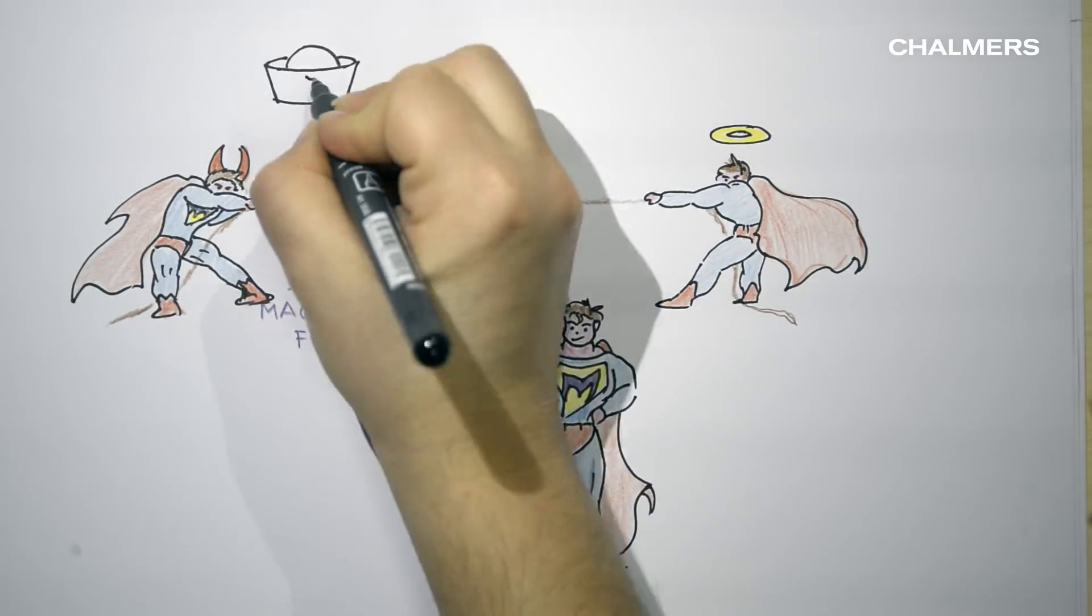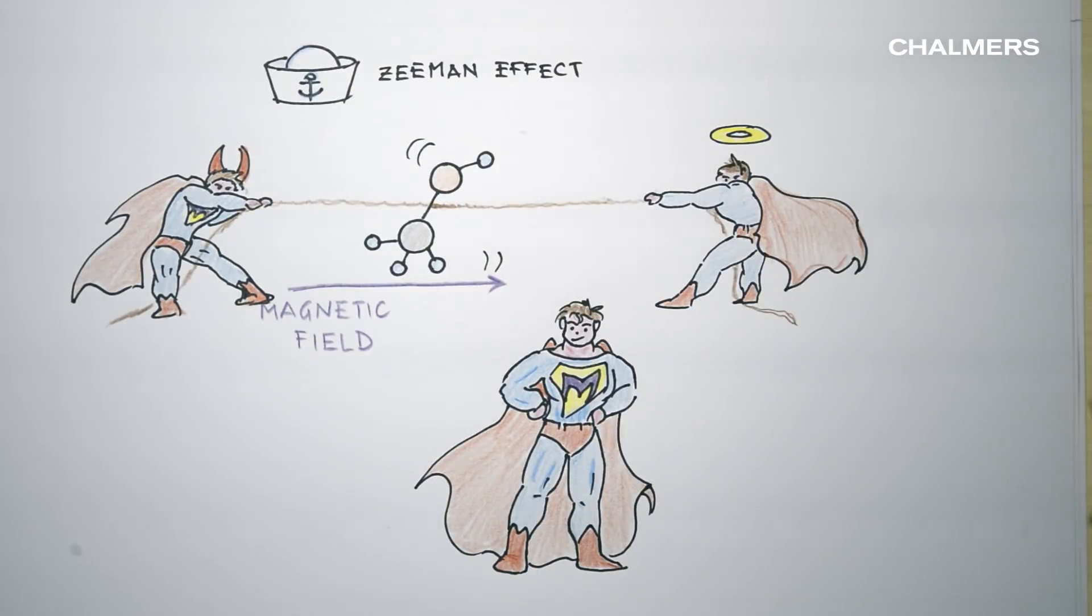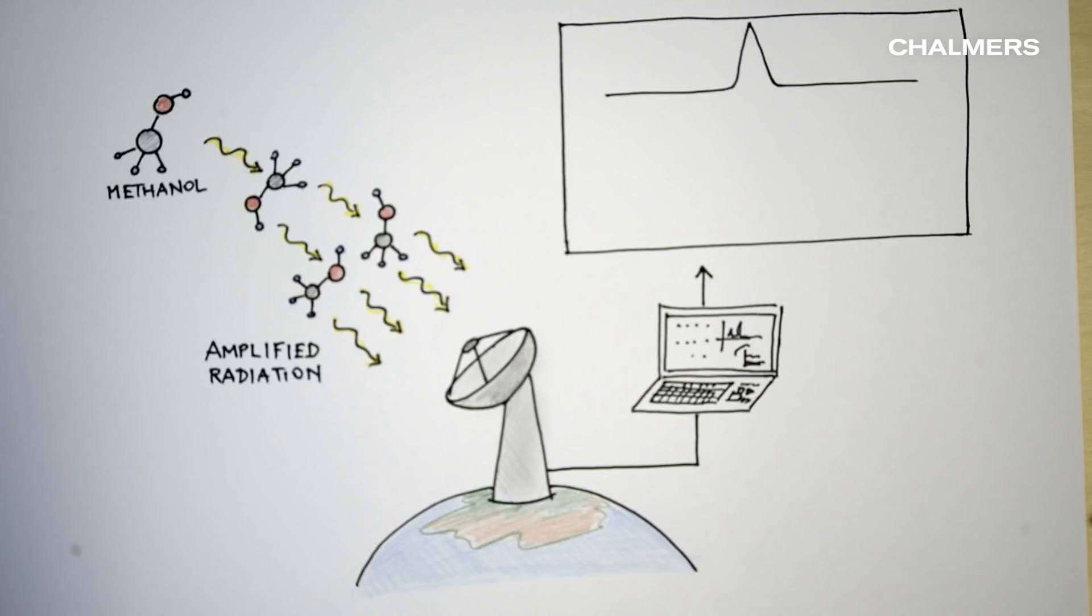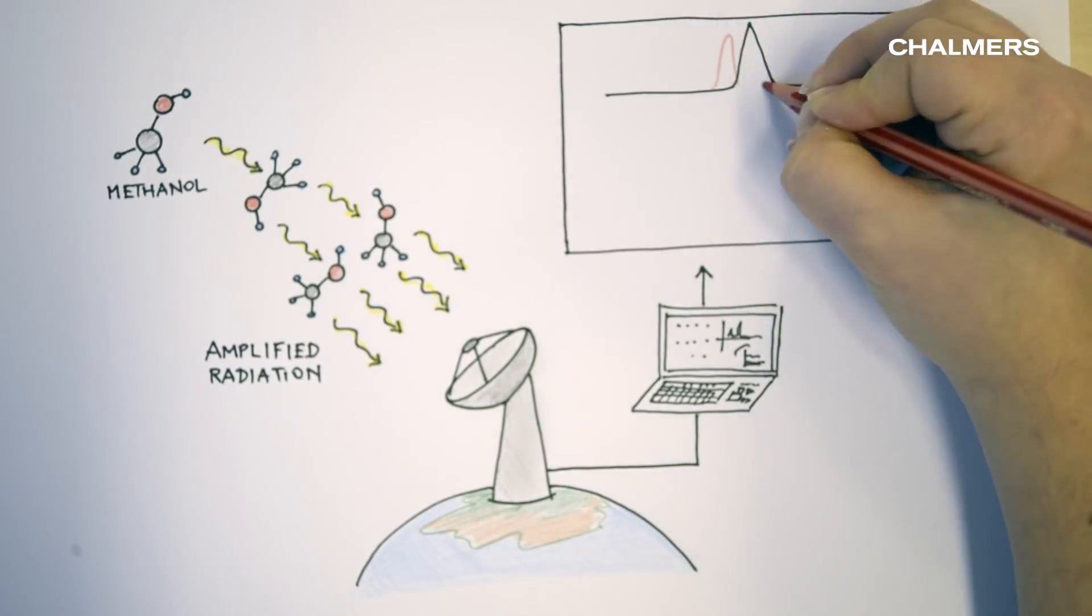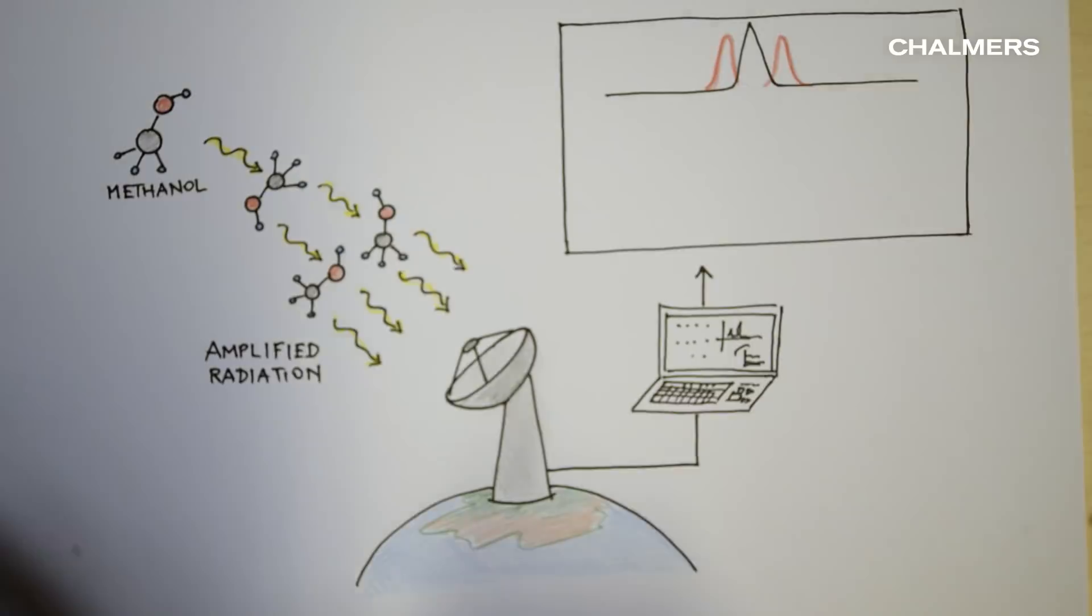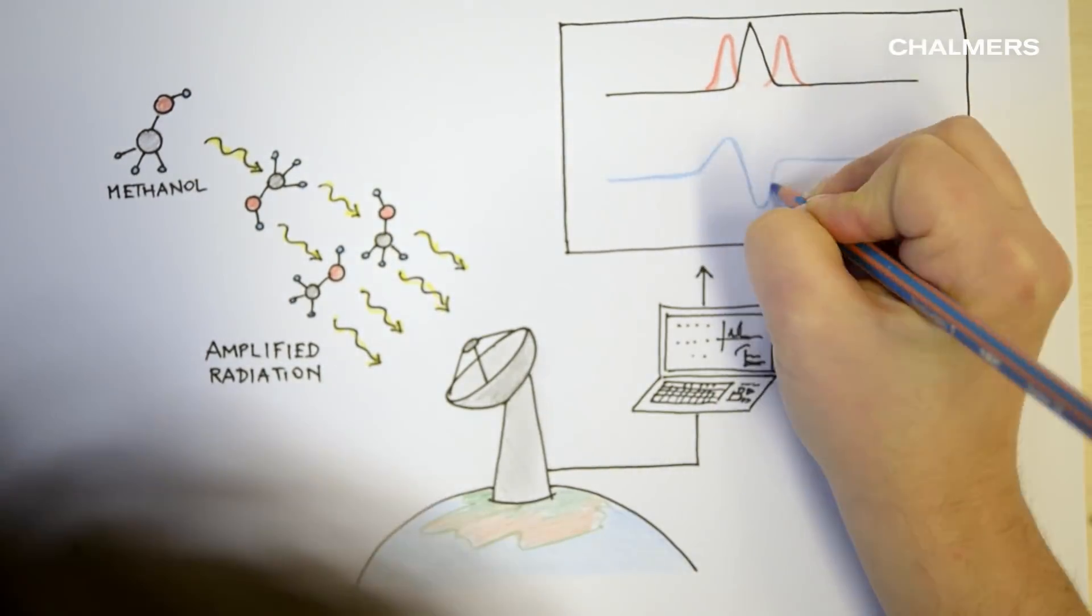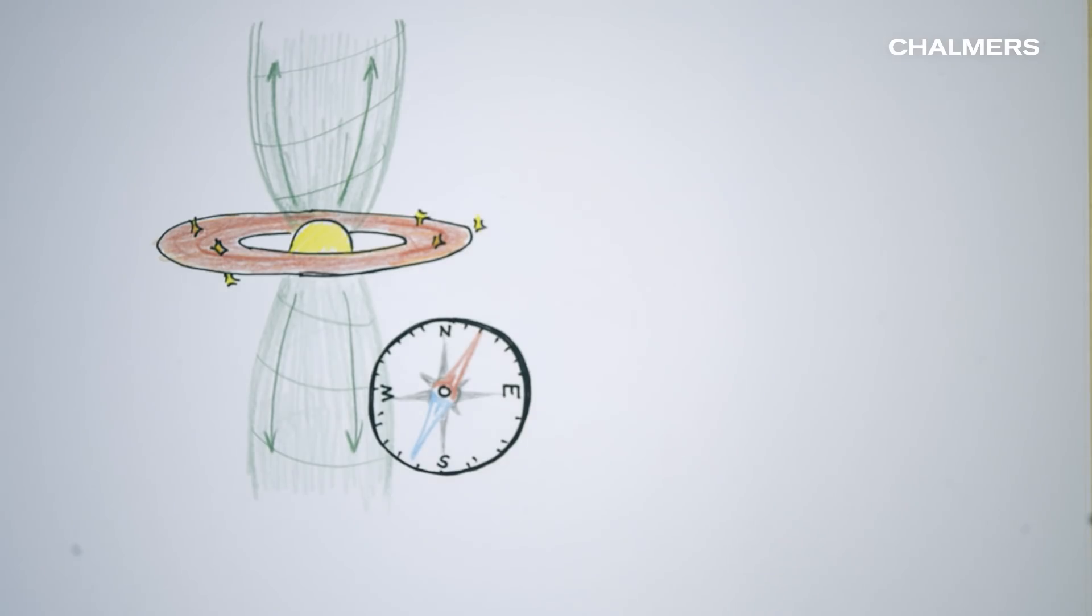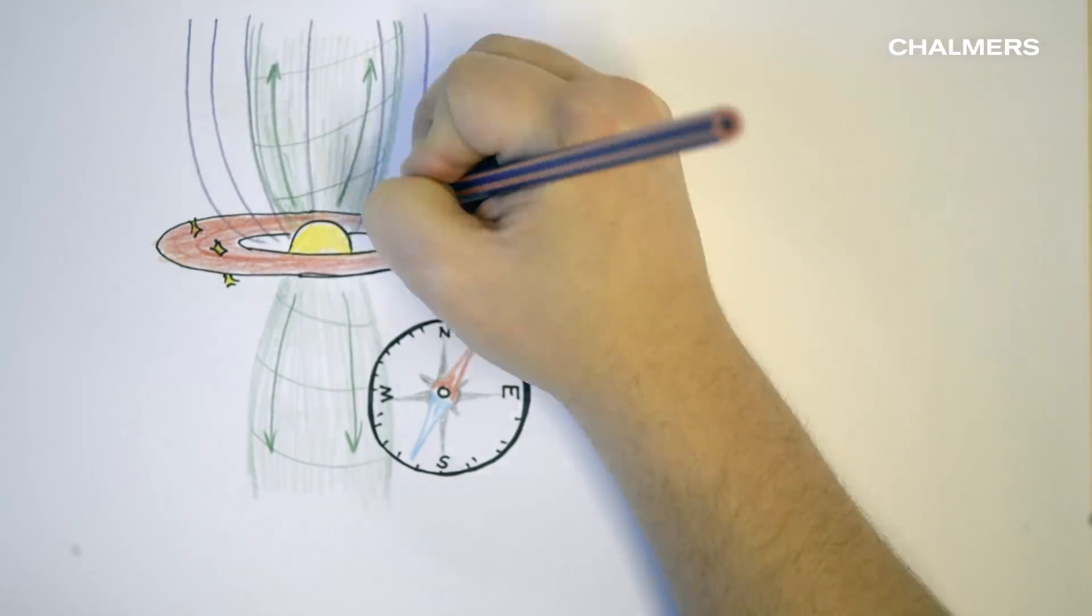Parts of the molecule reacting oppositely on a magnetic field is called the Zeeman effect. And this Zeeman effect can be seen in the maser signal. Because one part of the signal is shifted to one side, and the other part to the other. And by analyzing these shifted spectra, we can map out the magnetic field.